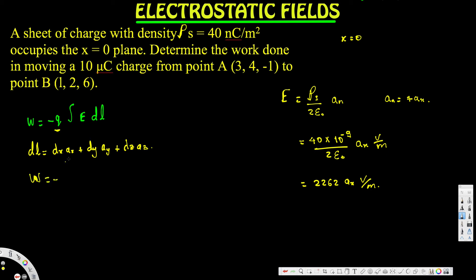W = -q. The given charge is 10 microcoulombs, which means 10 × 10⁻⁶. So -10 × 10⁻⁶ times the integral of 2262 ax, that's our electric field, times dl.